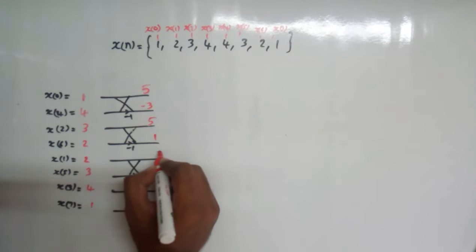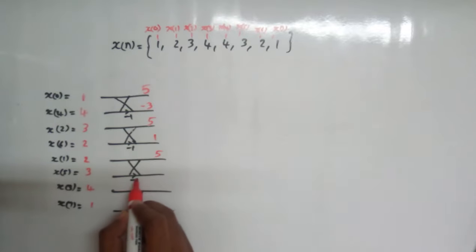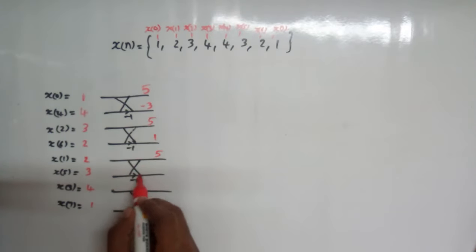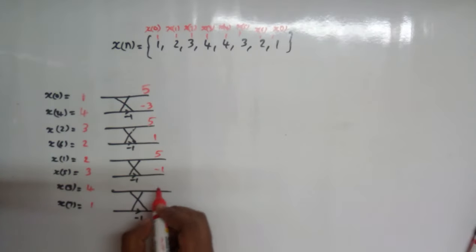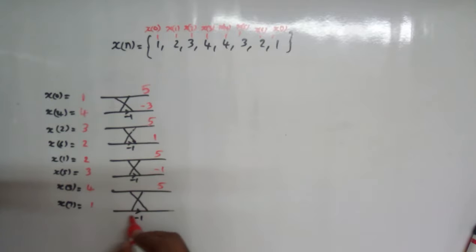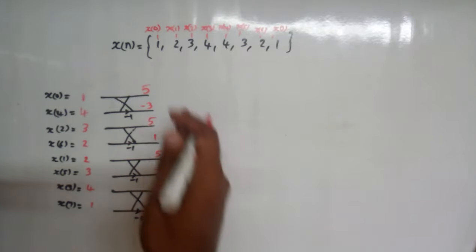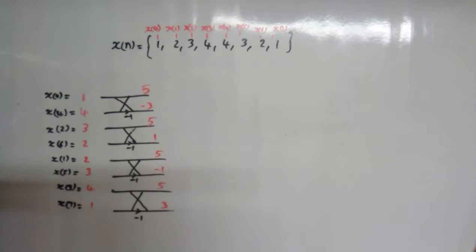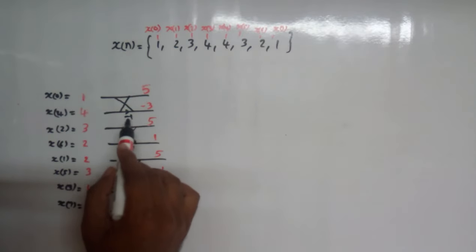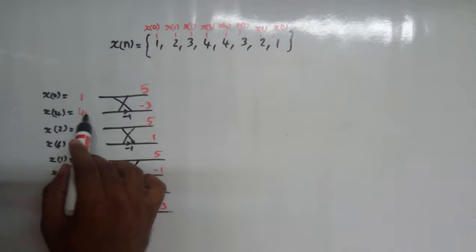2+3=5. Then 3×(−1)=−3, and −3+2=−1. So −1+4=3. We get the starting values for the next stage. We need to multiply with −1 at the bottom lines.